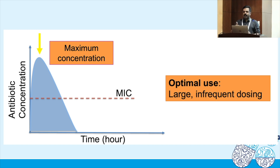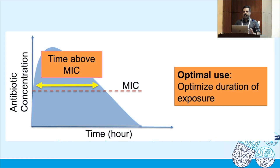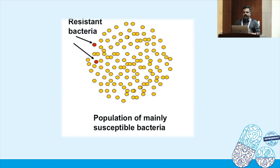Regarding PK/PD of different drugs in critically ill patients: antibiotics are either concentration-dependent or time-dependent. For concentration-dependent antibiotics, you target maximum concentration — that is why you use bolus dosing. For time-dependent antibiotics, such as the majority of beta-lactams, you need more time above the MIC — that is why most beta-lactam antibiotics are given as extended infusions.